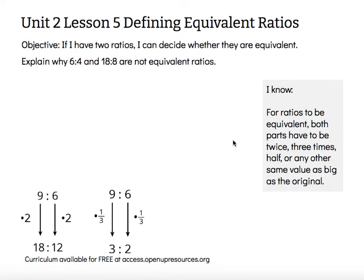And in this case, both the 9 and the 6 were made 3 times smaller, or 1 third as big. So we resulted in a ratio of 3 to 2.